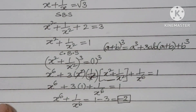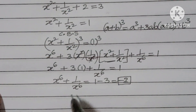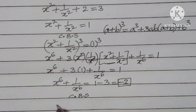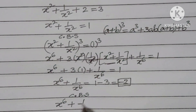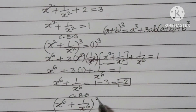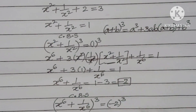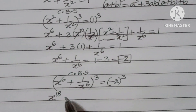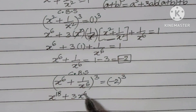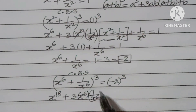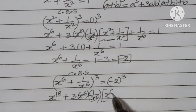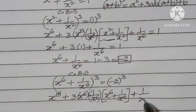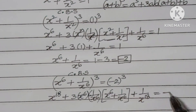Now our required value is x¹⁸ + 1/x¹⁸. Cube both sides of x⁶ + 1/x⁶ = -2. We get (x⁶ + 1/x⁶)³ = (-2)³, which expands to x¹⁸ + 3·x⁶·(1/x⁶)·(x⁶ + 1/x⁶) + 1/x¹⁸ = -8.